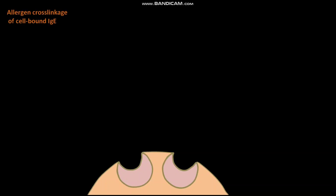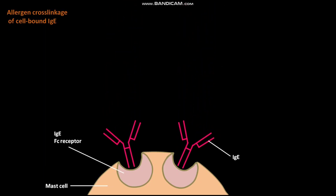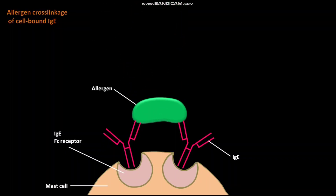Let us discuss mast cell degranulation by allergen cross-linkage of cell-bound IgE. On the surface of the mast cell, IgE Fc receptors are present. First, IgEs bind to the IgE Fc receptors. The allergen then binds to the bound IgEs in such a way that the bound IgEs are cross-linked by the allergen. The mast cell then undergoes degranulation.